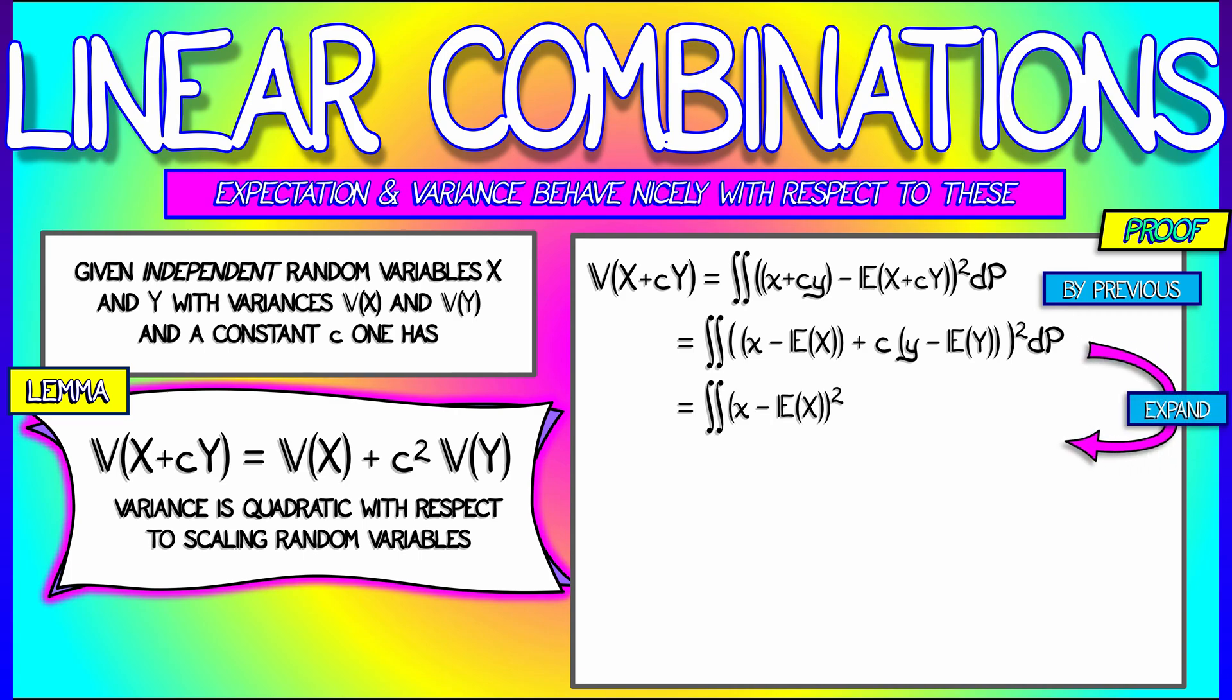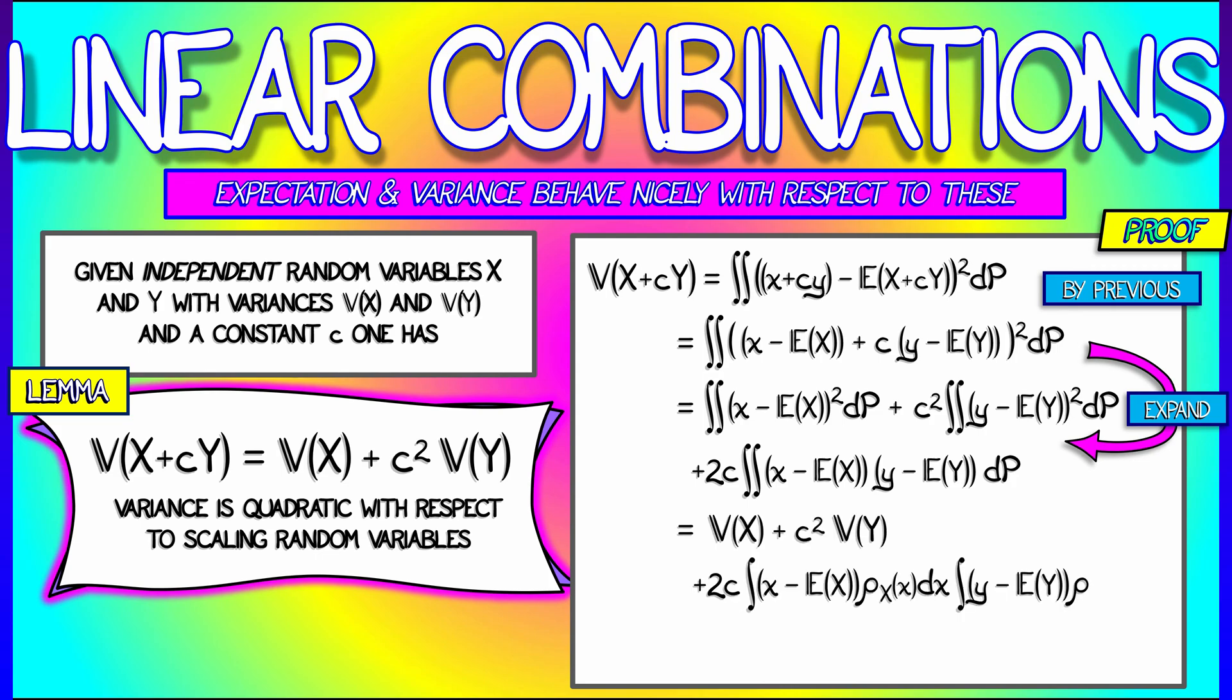If we do a little bit of rearrangement in these terms, and then expand out that quadratic integrand, then we get three integrals. One is quantity X minus E(X) squared. The second, pulling out the constant c squared, gives us the double integral of Y minus E(Y) squared, and then that third term is kind of weird looking.